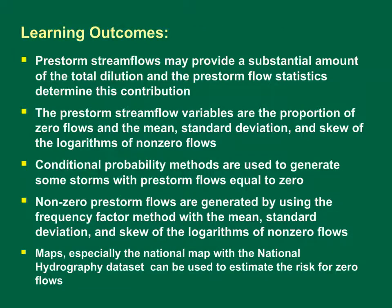In this module, we learned that pre-storm streamflows may provide a substantial amount of the total dilution, and pre-storm flow statistics determine this contribution. The pre-storm streamflow variables are the proportion of zero flows and the mean, standard deviation, and skew of the logarithms of non-zero flows. Conditional probability methods are used to generate some storms with pre-storm flows equal to zero, and non-zero pre-storm flows are generated using the frequency factor method with the mean, standard deviation, and skew of the logarithms of non-zero flows. Maps, especially the national map with the National Hydrography Dataset, can be used to estimate the risk for zero flows.